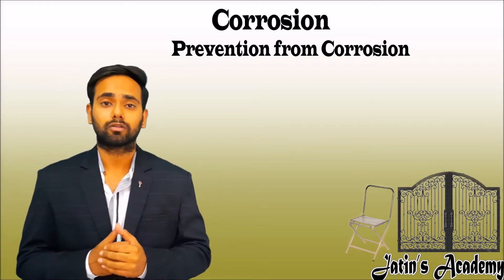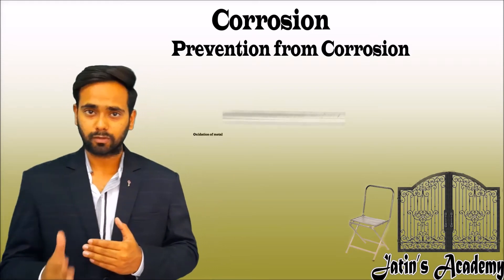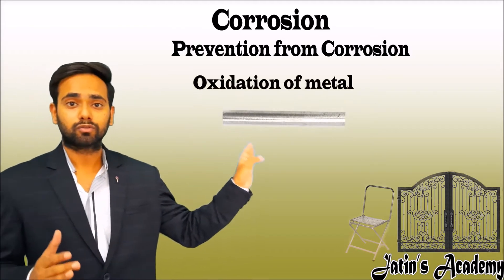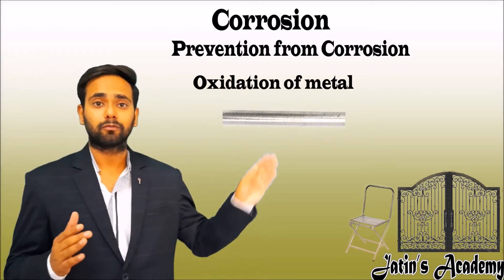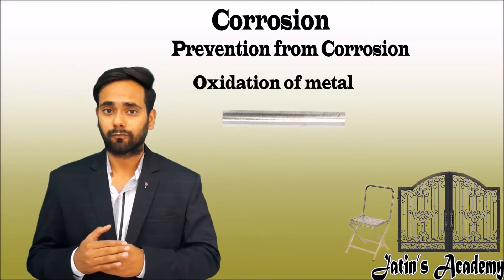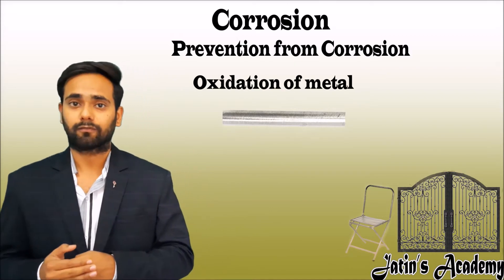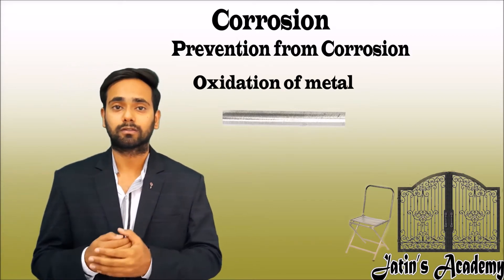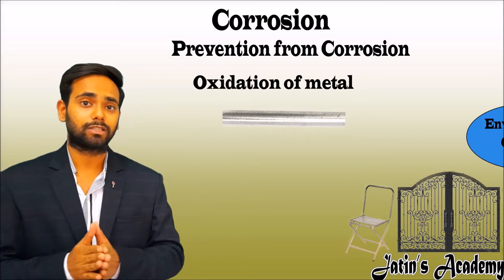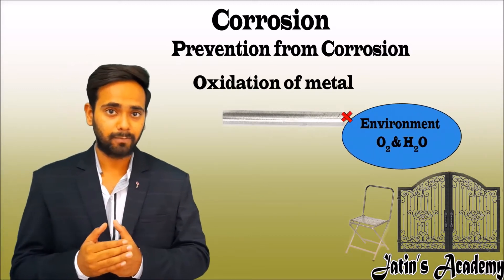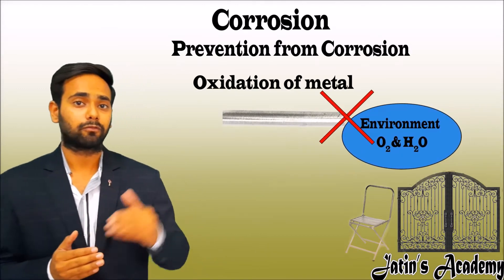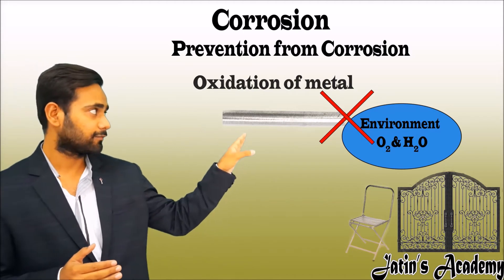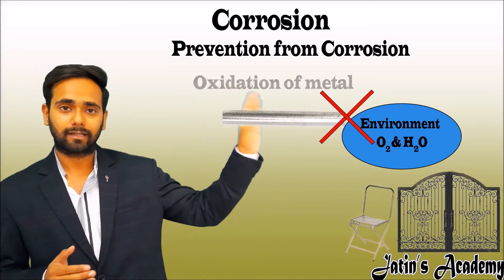What is the main cause of corrosion? The main cause of corrosion is metal oxidation. So we have to avoid the oxidation of the surface of the metal. What is the source of oxidation? The source of oxidation is the environment — it means we have to cut down the link between the metal surface and the environment.